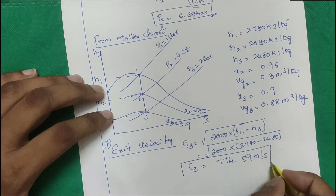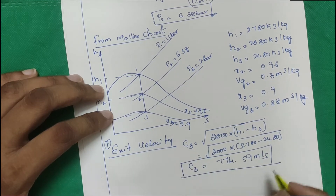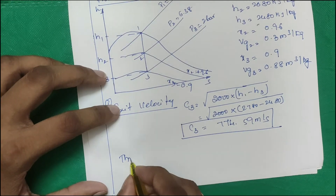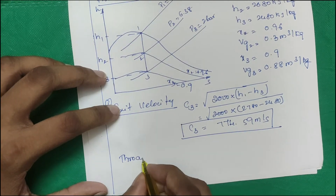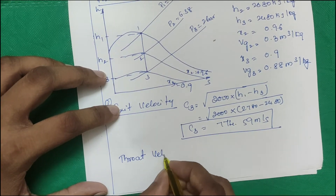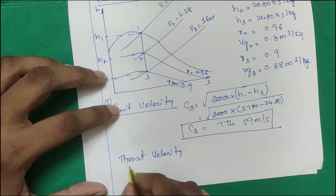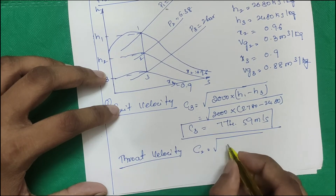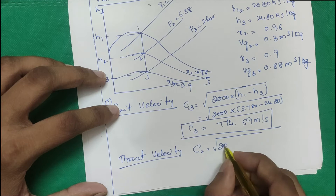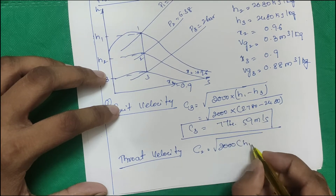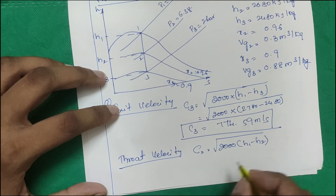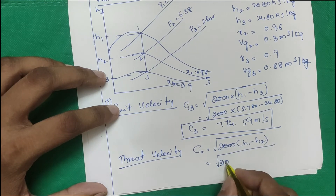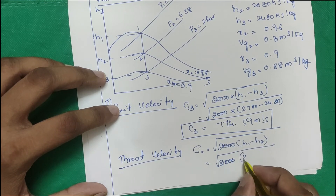Next, find throat velocity c2 using: c2 = √(2000 × (h1 − h2)), where h1 = 2780 and h2 = 2680 kJ/kg.